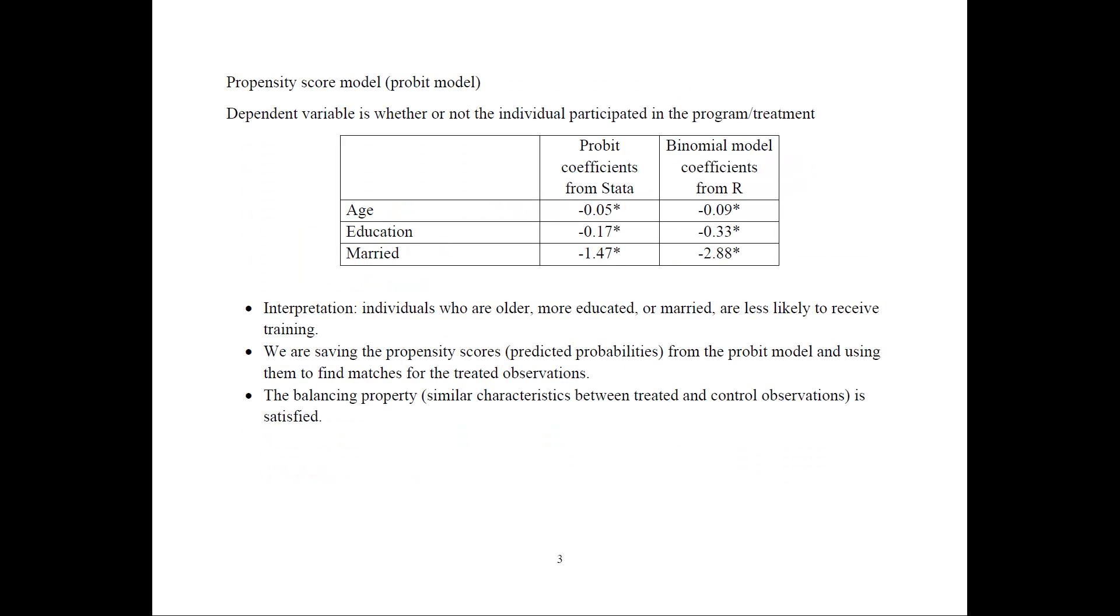The first thing to do is estimate a propensity score model, or that would be a probit model. The dependent variable would be whether or not the individual participated in the program, or in the treatment. Here we have the independent variables age, education, and married.